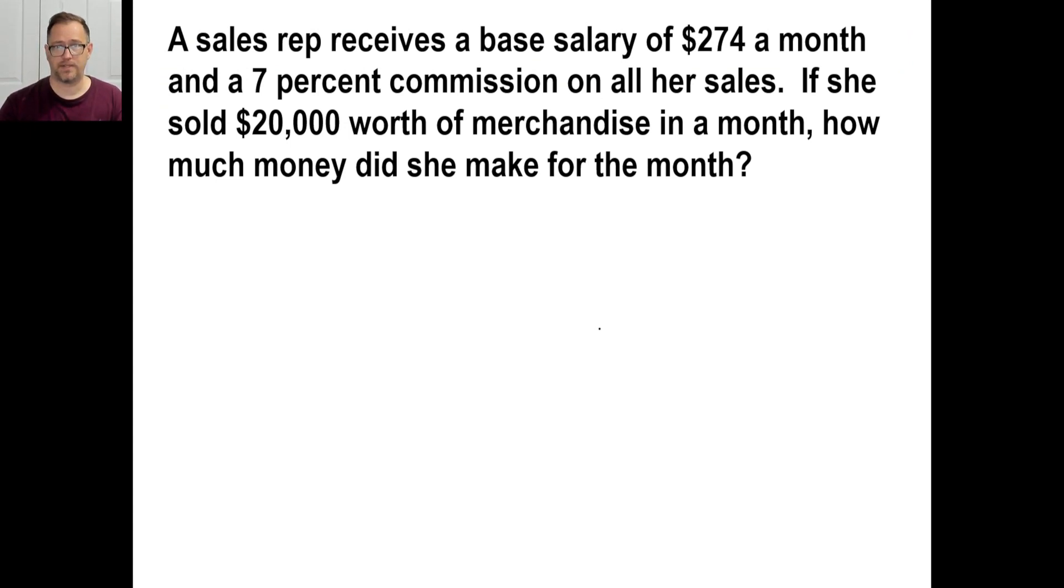Okay. The sales rep gets a base salary of $274 a month. 7% commission on sales. She sells this many. And, of course, the question we have to ask is, what is 7% or 7 hundredths or .07, whatever you want to call it, of $20,000? There we go. Two zeros. Choppy chop. Two zeros there. Seven times 200 is 14 with two zeros. There you go. That's what she adds to her money here. So, she makes, in that month, $1,674 that month. So, there we go. Okay. All right.